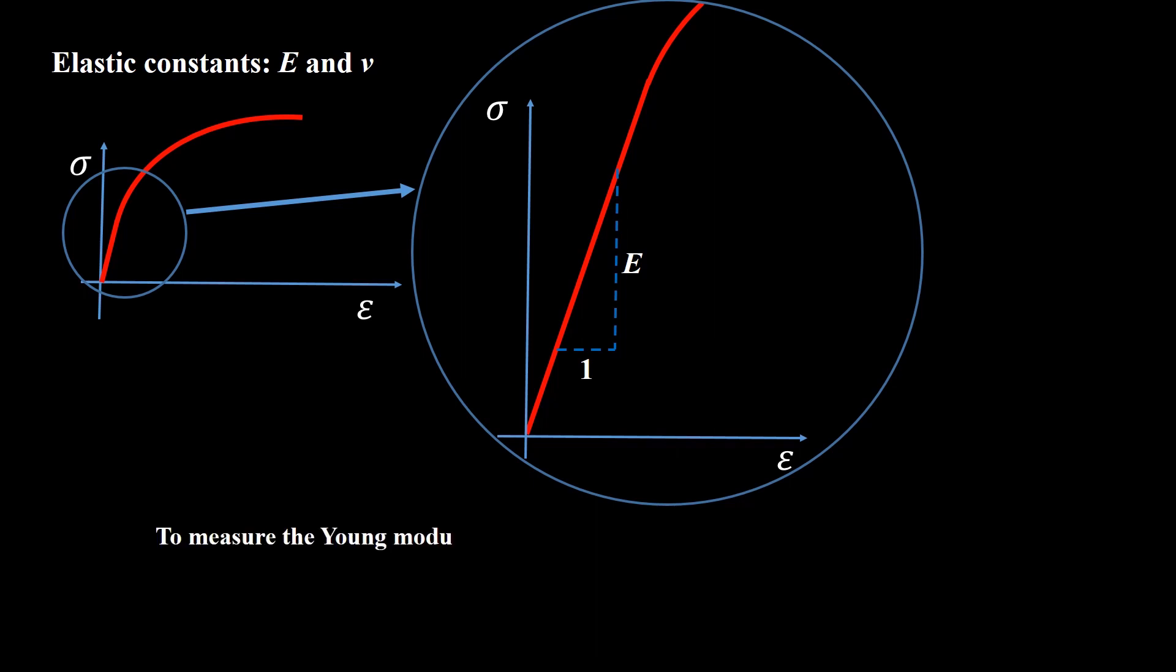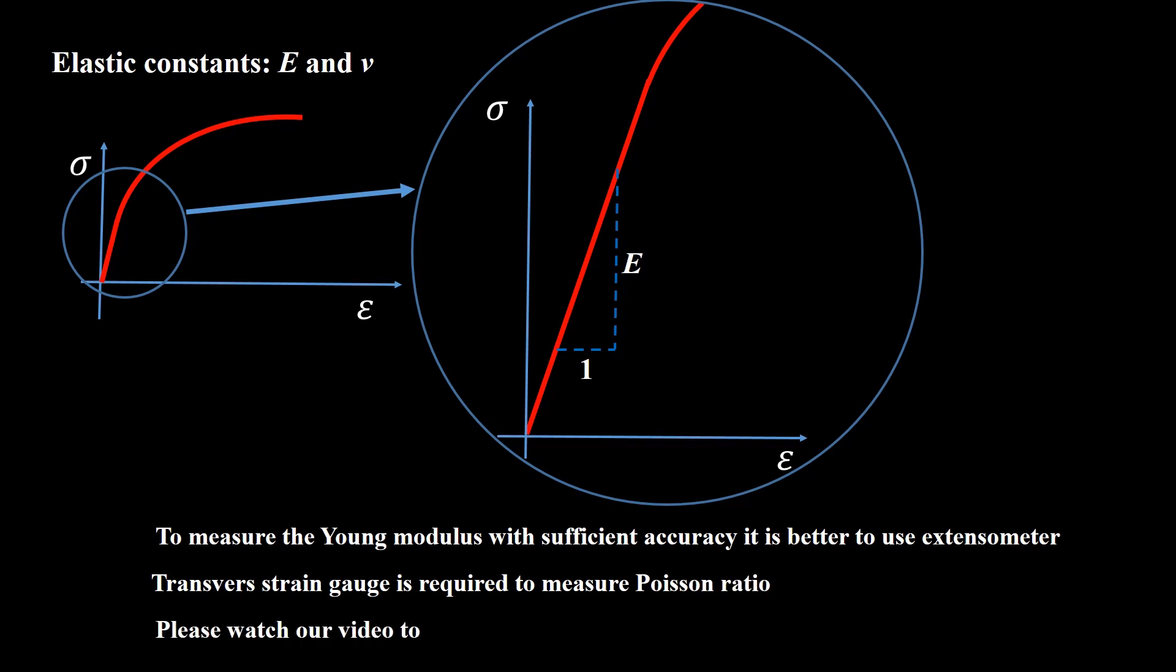Please note that to measure the Young modulus with sufficient accuracy it's better to use Extensometer and transverse strain gauge is required to measure Poisson ratio. If you like to measure the Poisson ratio by capturing image of the specimen deformation, please watch our video about measuring Poisson's ratio by ImageJ software.